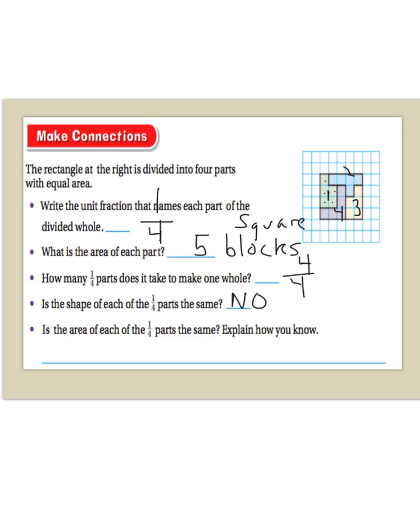For the last task, we need to find out if the area of each of the 1 fourth parts is the same. Explain how you know. Well, we figured that out already because each part contains 5 square blocks.